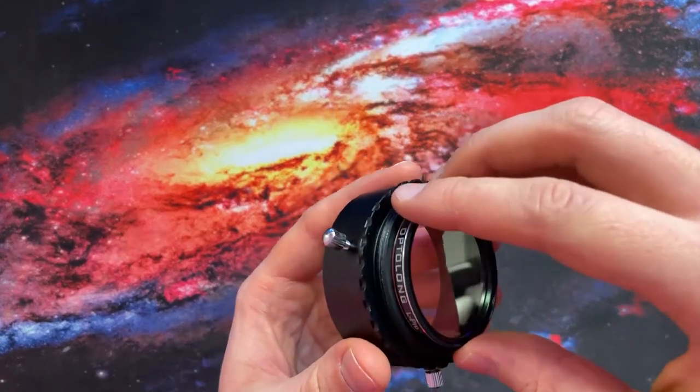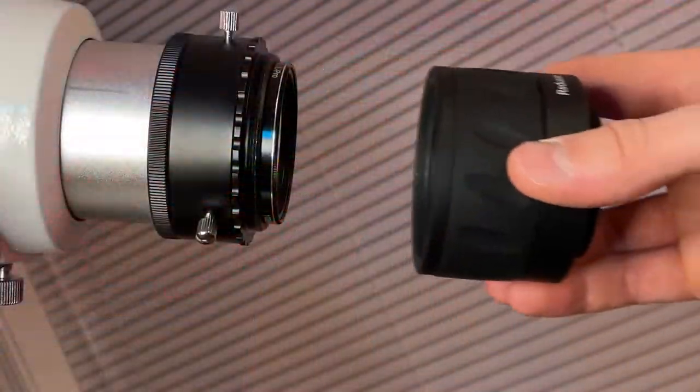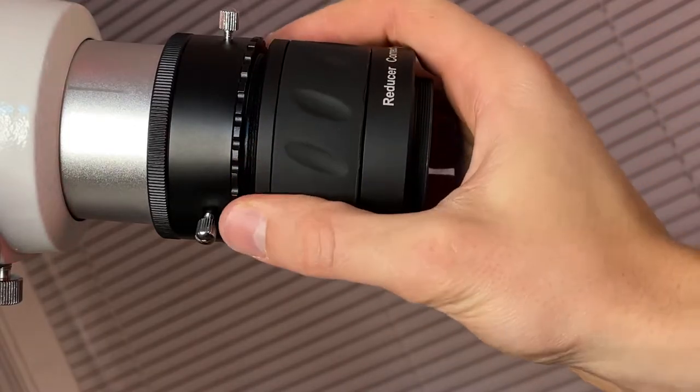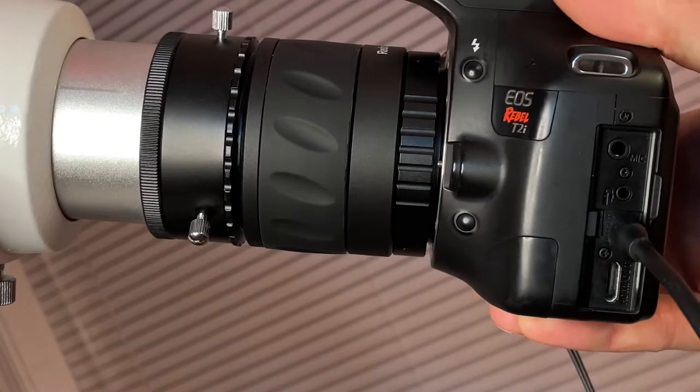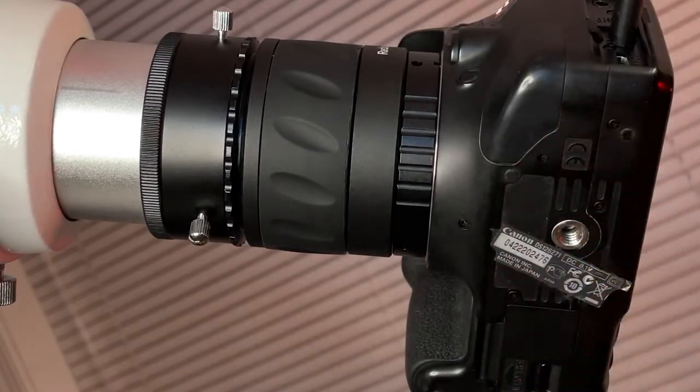So the filter fits inside of rotator adapter, then I have my Skywatcher focal reducer and field flattener connected, and the camera Canon Rebel T2i that is connected at the end of the rig.